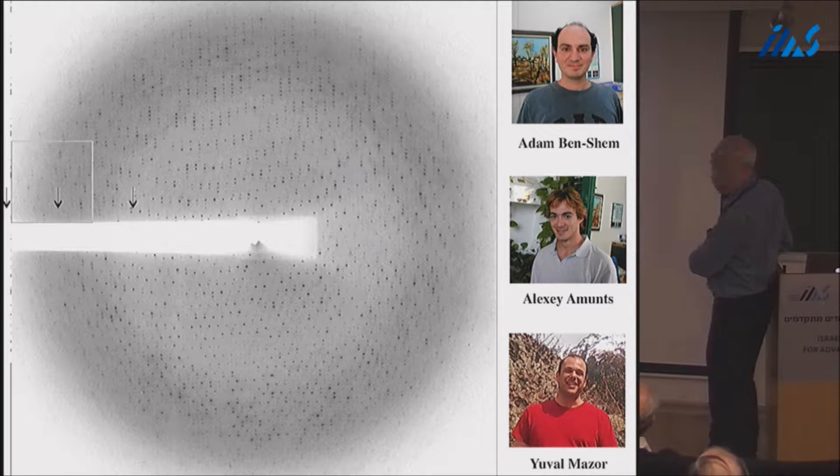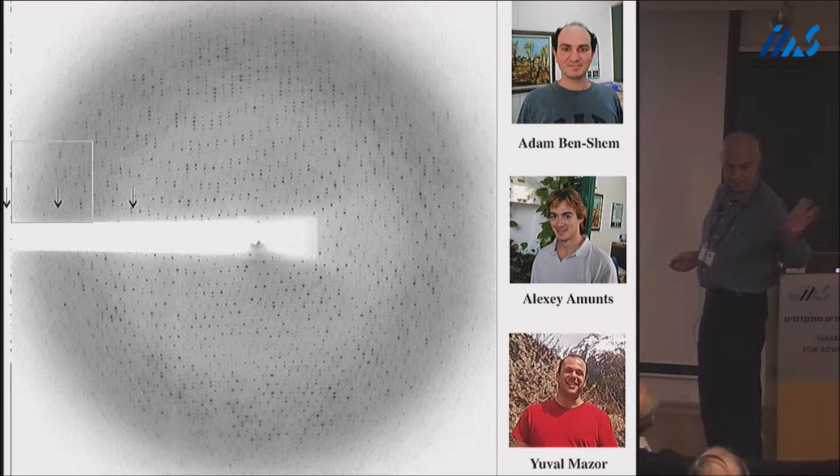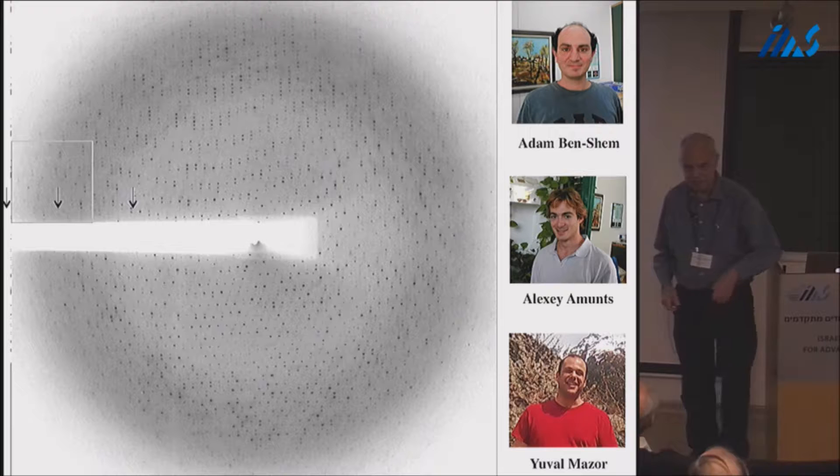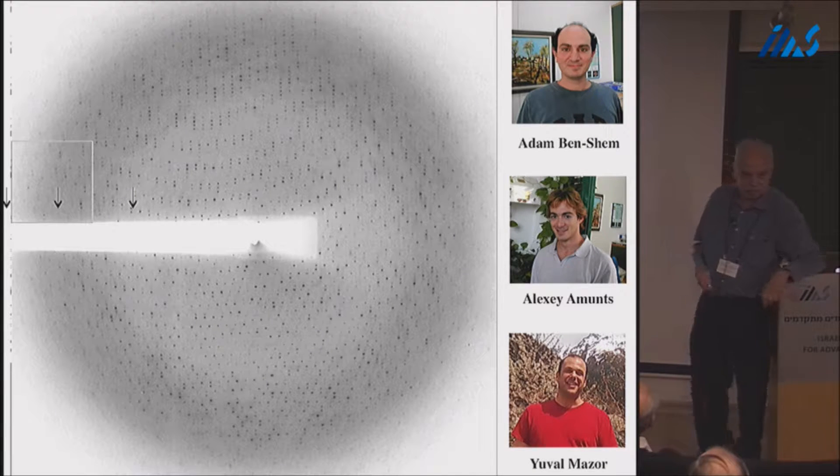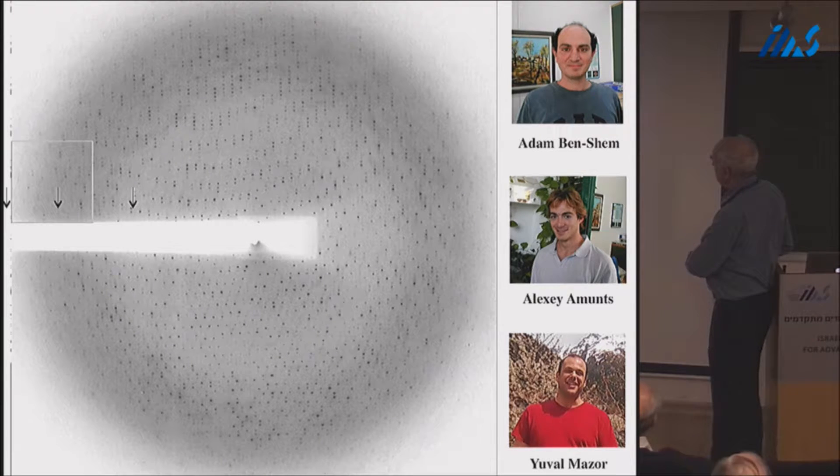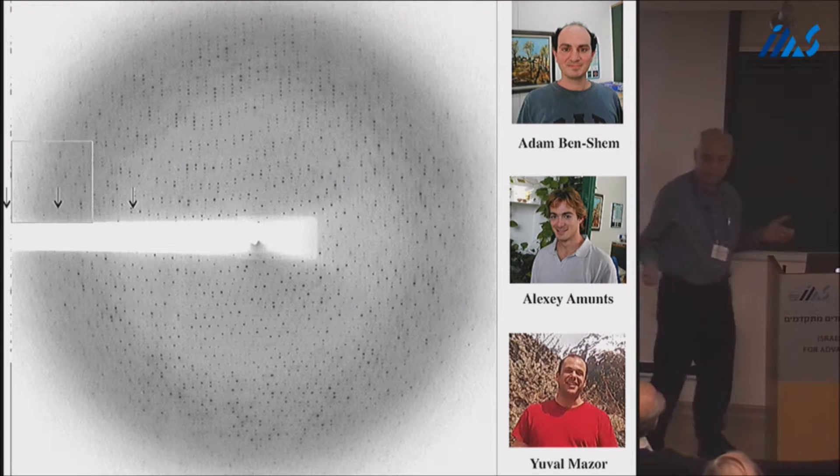He solved it to this, the diffraction to this point. Then we keep doing it. And Alexei Amunts came to this point, 3.4 Angstrom resolution. And Yuval Mazor came now to here, just about to here, and you will see it soon. These two people became very famous, because he also solved the eukaryotic ribosome for the first time.